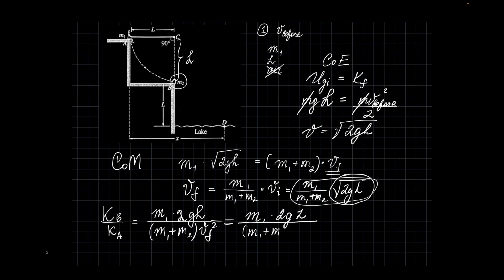Sum of masses, M1 plus M2, 2gl again. So like I said, this is going to cancel. M1 squared and then M1 plus M2 also squared. This gets away, one mass gets away. And we end up with M1 plus M2 divided by M1. That is the ratio.